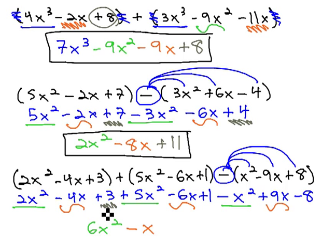Finally, 3 plus 1 minus 8 gives us negative 4.